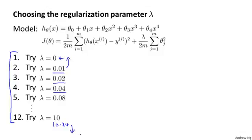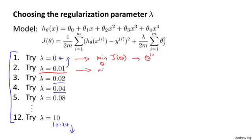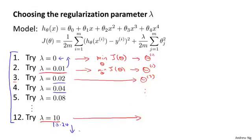Given each of these 12 models, we can take the first model with lambda equals 0 and minimize my cost function J of theta, giving some parameter vector theta — let me denote this theta superscript 1. Then I take my second model with lambda set to 0.01 and minimize my cost function to get theta 2, and for the third model I get theta 3, and so on until for my final model with lambda set to 10.24, I end up with theta 12.